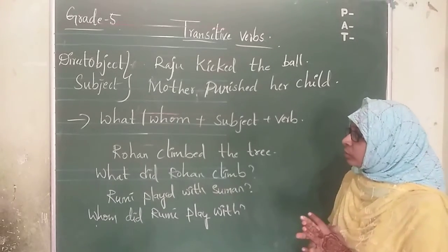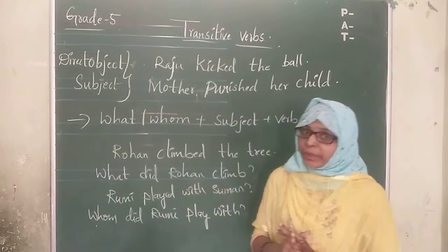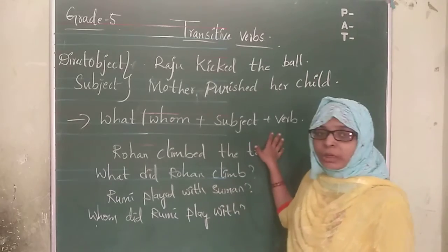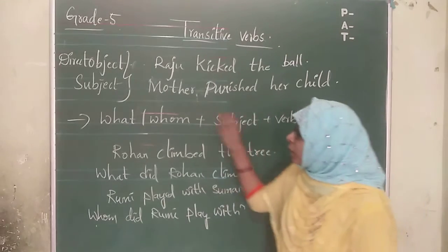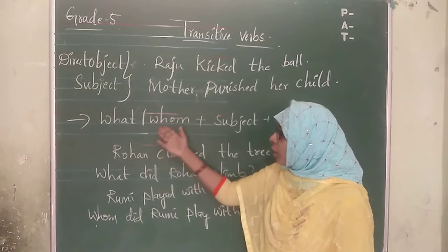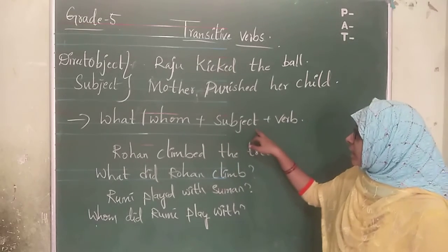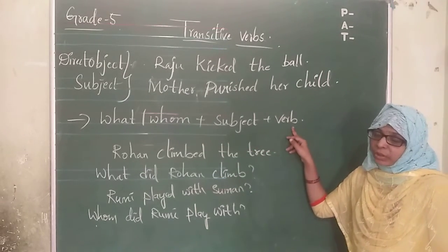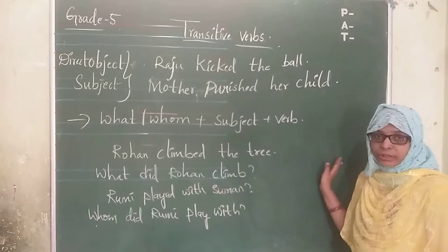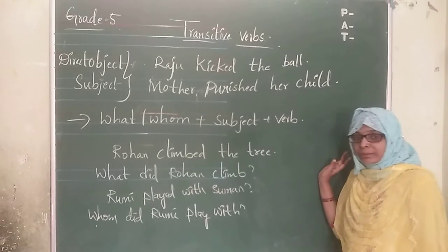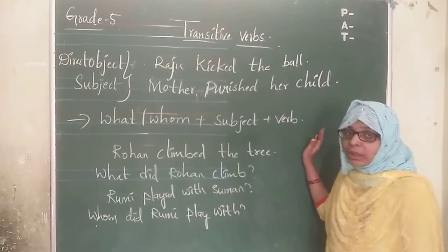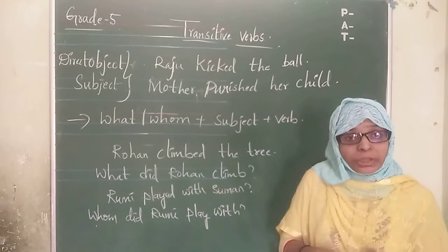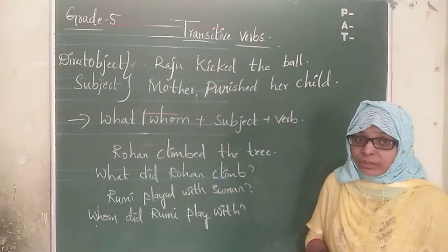Now let us see how to identify a direct object. This is the formula structure: what or whom + subject + verb. This structure will let us know what is the direct object in the given sentence.